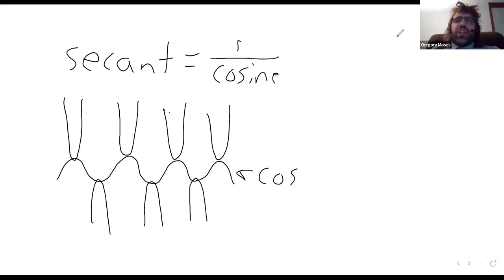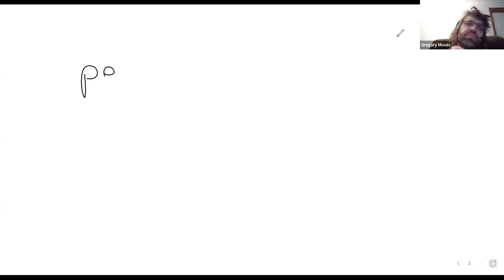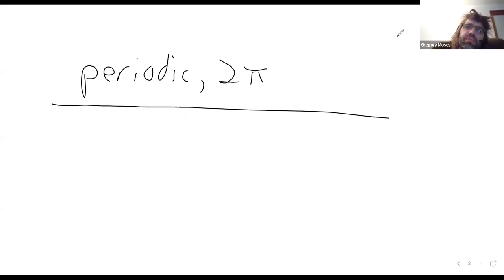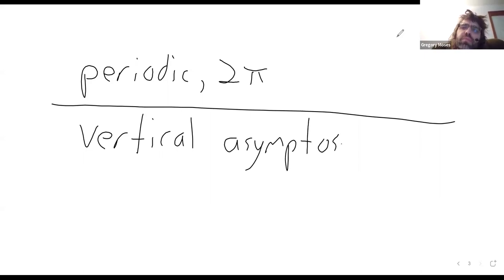Trying to jot down a few properties of the secant. It's periodic and it shares its period with the cosine. Its period is two pi. It has its vertical asymptotes when the cosine is zero. So pi over two plus or minus integer multiples of pi.